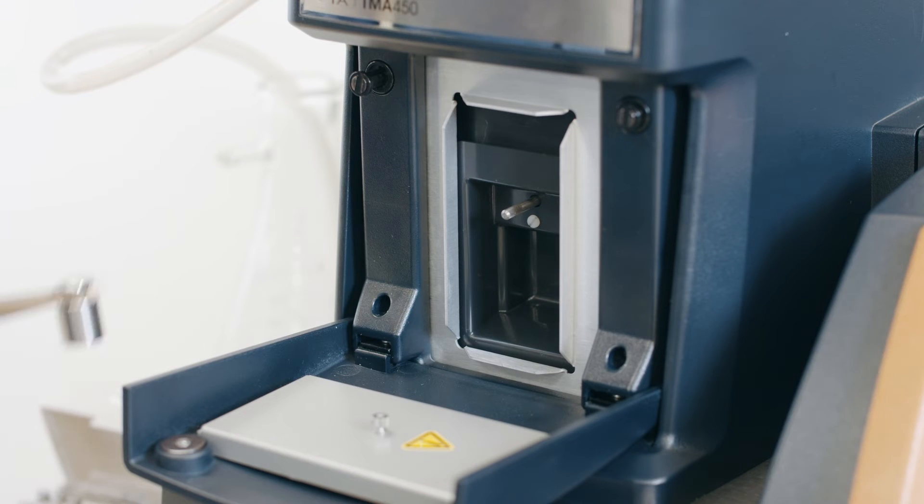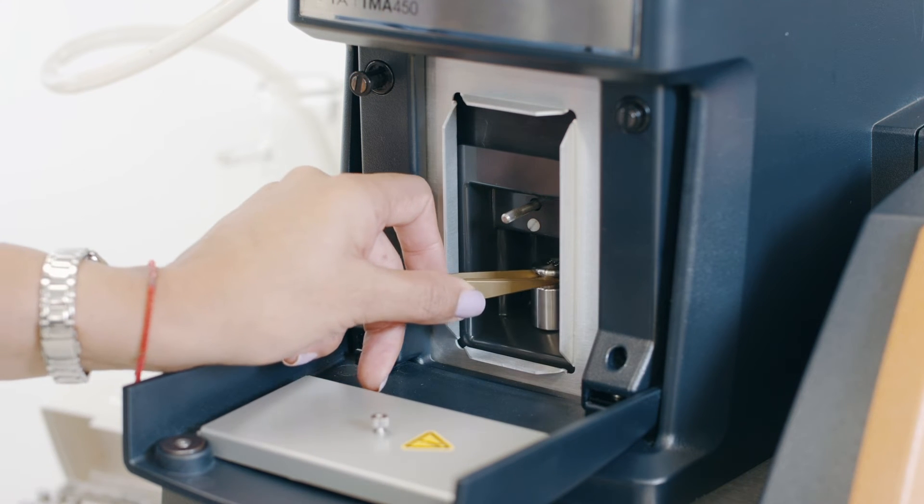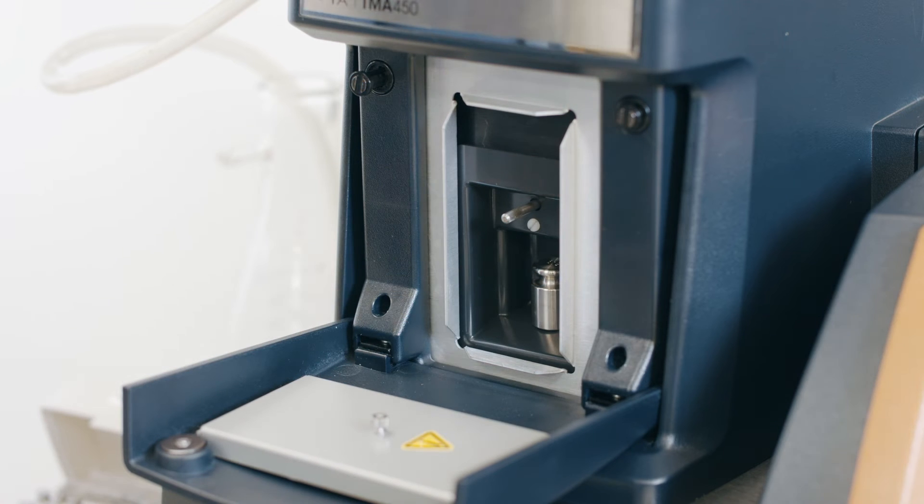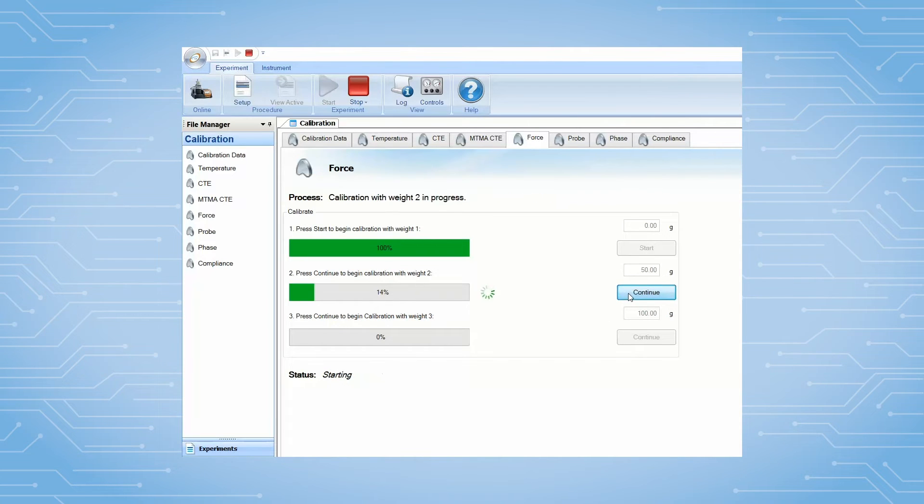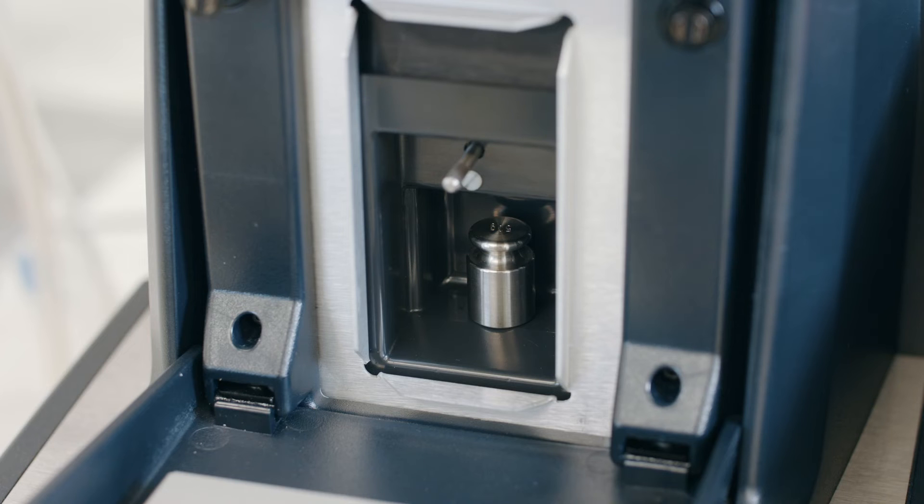When this first step is complete, place the first weight on the weight tray and click continue. You can use a different weight than the recommended one as long as it is lower than 100 grams.